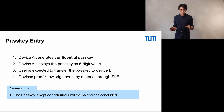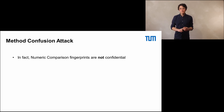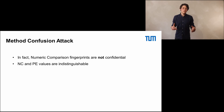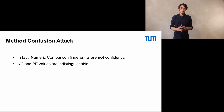Now let me throw in two observations. Numeric comparison values are not confidential because the data used to calculate the hashes is completely publicly exchanged. Secondly, passkey entry values and numeric comparison values are completely compatible and indistinguishable from each other — both are six-digit decimal values. That means these methods can work with each other and interact without noticing that the other device is doing something completely different — there is a method confusion. At the same time, a passkey entry method can be fed with numeric comparison values, which are not confidential, and therefore violate the assumptions of passkey entry.